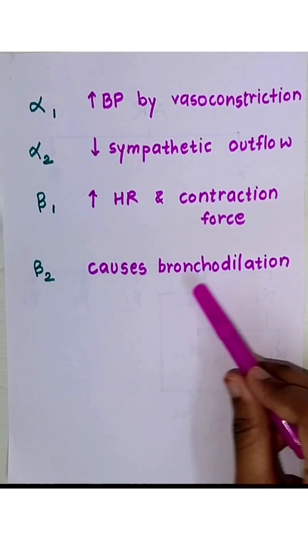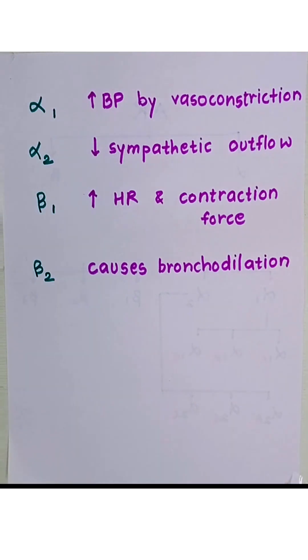Beta2 causes bronchodilation. Always remember that alpha receptors cause vasoconstriction, that is constriction, whereas beta receptors cause dilation.